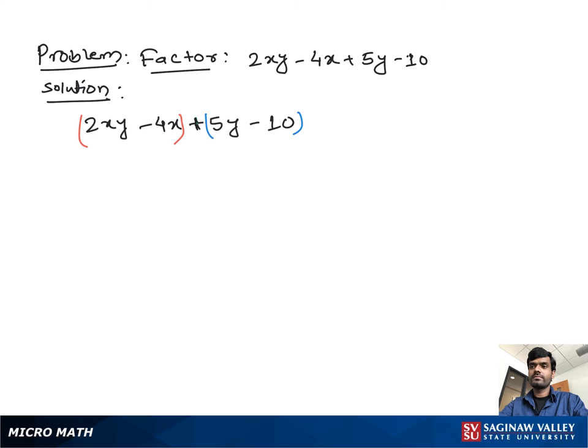From the first two terms, we take out 2x as a common factor, so we have (y - 2) left. From the last two terms, we take out +5 as a common factor, then we also have (y - 2) left.